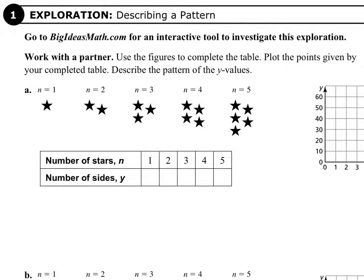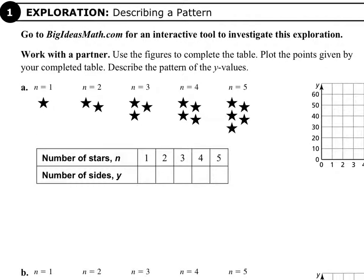Starting with the first set of drawings: there are five points, and around each point there are two lines connected, giving ten sides total. There's two lines connected to each point — you can think of it that way. So the first one is ten. I'll let you count the rest and go from there, so on and so forth.